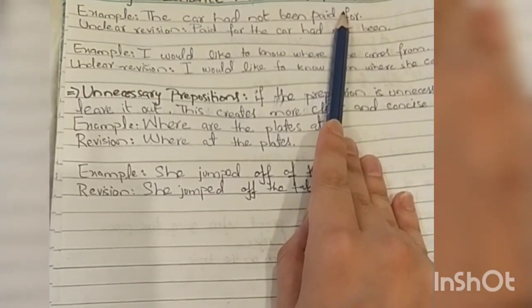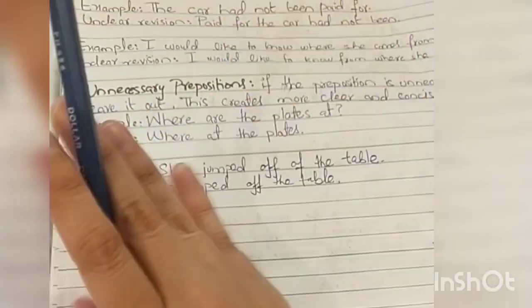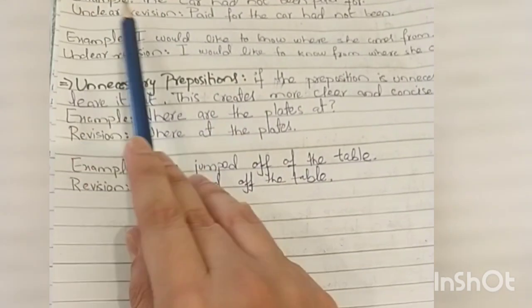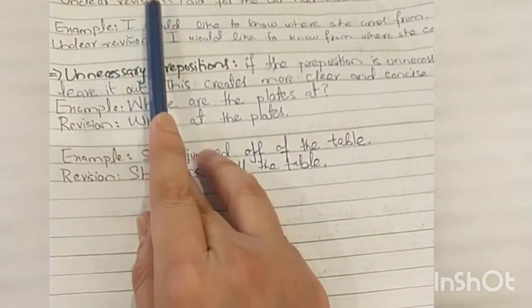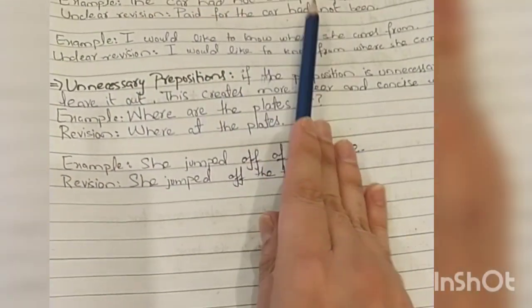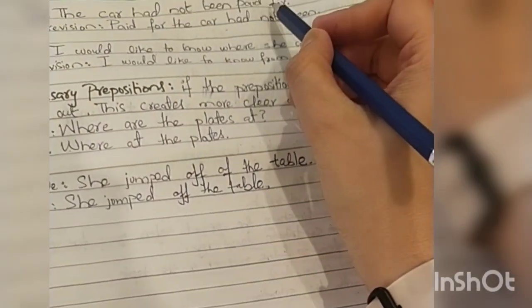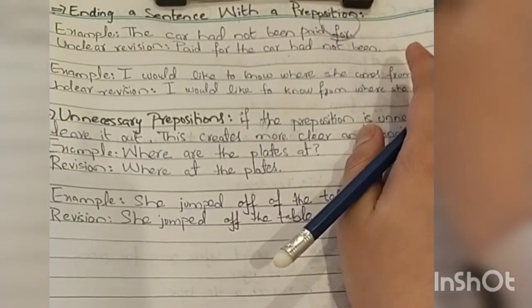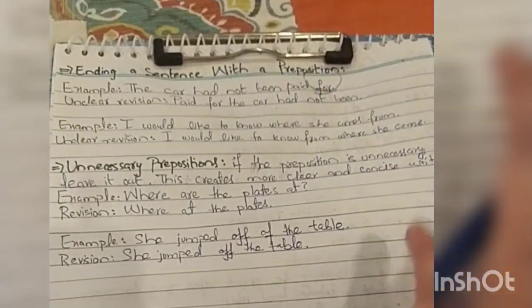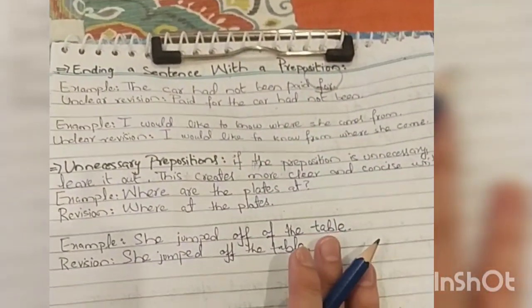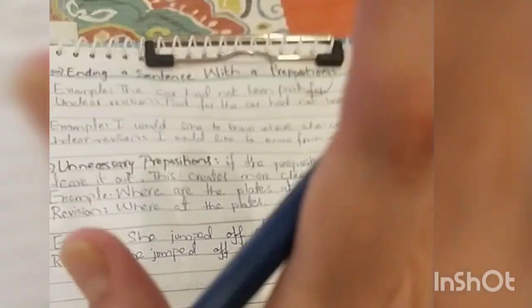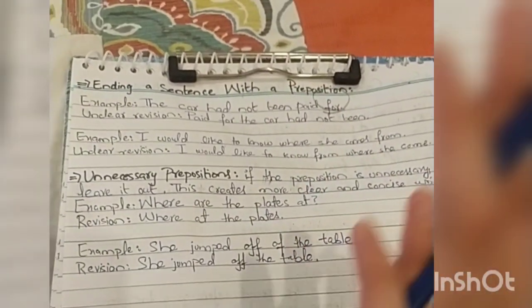The first thing we have is ending a sentence with a preposition. Can we do it? Definitely, of course you can do it. The first example we have here is the car had not been paid for. That's a perfect sentence. Here we have used a preposition at the end and it is definitely there. It should be there.